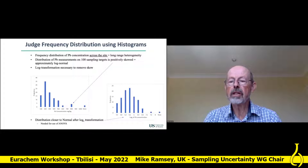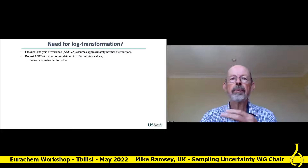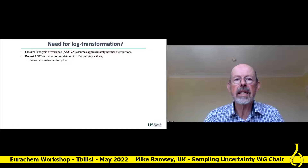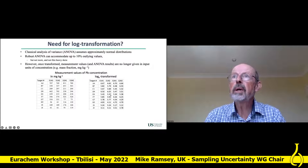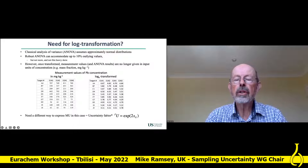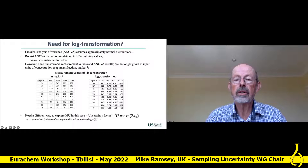That has implications for the analysis of variance. Analysis of variance needs an approximately normal distribution. We can use robust analysis of variance when there's only up to 10% outliers, but this isn't the case here. And when we look at the log-transformed results, they're not in concentration units anymore, so we need a new way of expressing uncertainty. This is where we need the uncertainty factor, where SG is the standard deviation of the log-transformed values — we take the exponential of that to get the uncertainty factor.